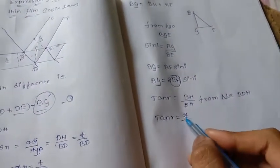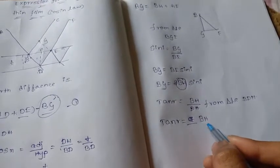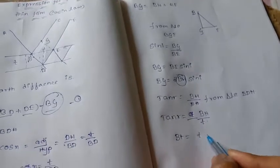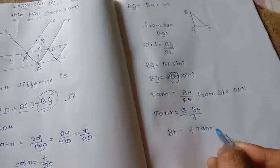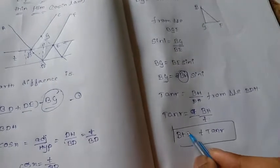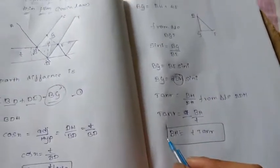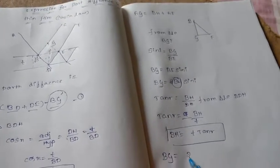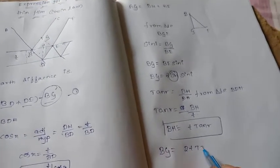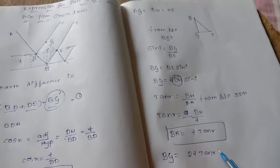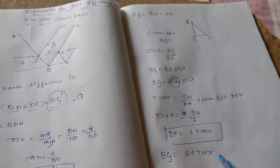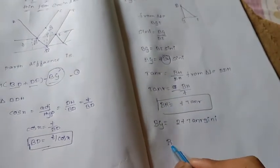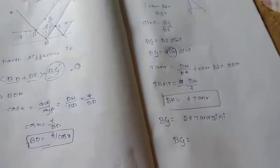BH divided by T, BH equal to T tan R. Substitute in this is equal to two times two T tan R, two T tan R sine ABG.